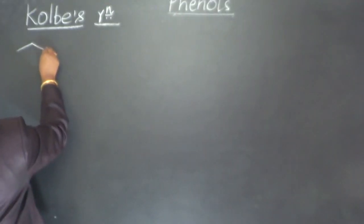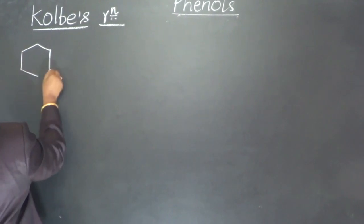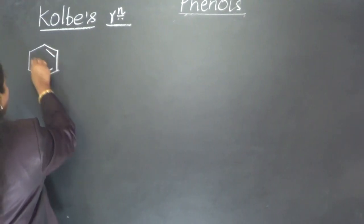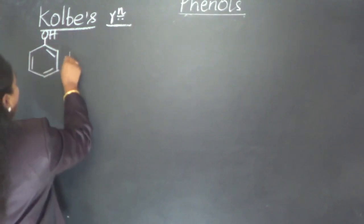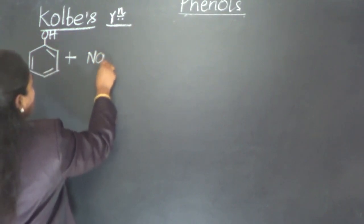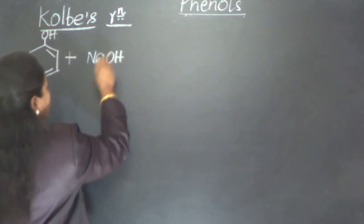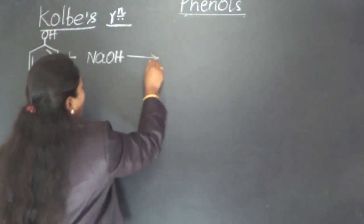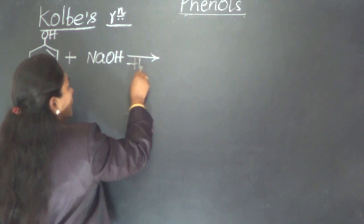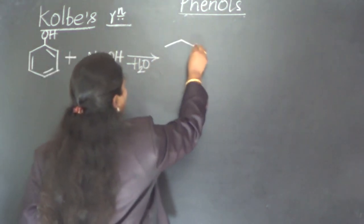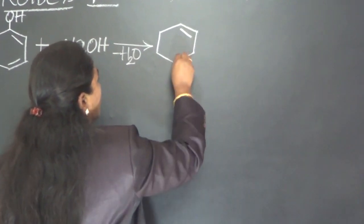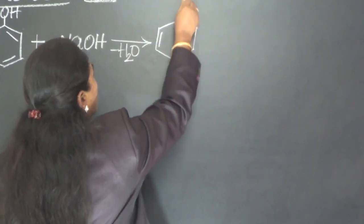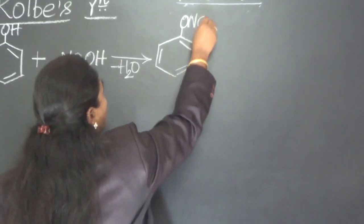Phenol is first converted into sodium phenate. How is that being done? It is treated with sodium hydroxide. It undergoes neutralization, forming sodium phenate salt and water. The sodium phenate salt formed is like this: ONa attached to benzene.